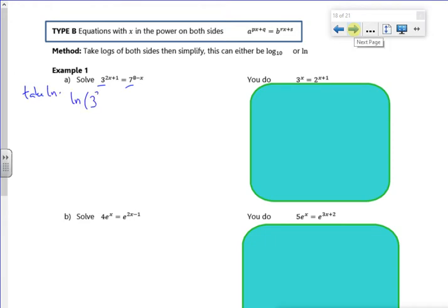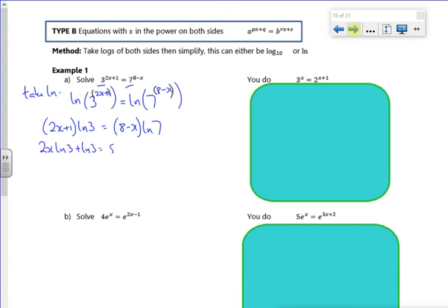So I've got ln of 3 to the power of 2x plus 1. It's ln of 7 to the power of 8 minus x. I'm going to use the rule that says the power I can put at the front. Now I tend to do this straight up. So I've got 2x plus 1 times log 3. And I've got an 8 minus x times log 7. Then I'm going to expand my bracket. So I've got 2x log 3 plus log 3. It's an 8 log 7 minus x log 7. And I'm going to collect like terms. I'm going to take the ln 3 over there. I'm going to take the x ln 7 over there. So I've got 2x ln 3 plus x ln 7 is equal to 8 ln 7 minus ln 3.